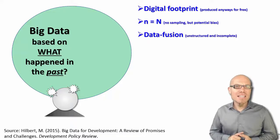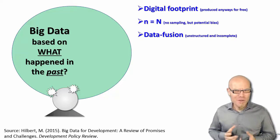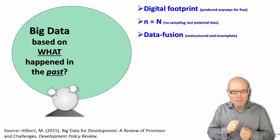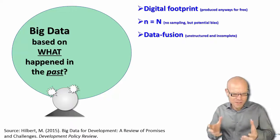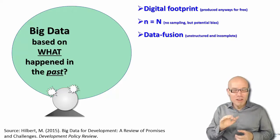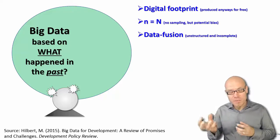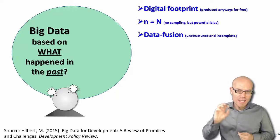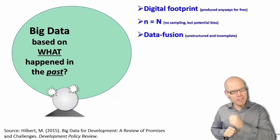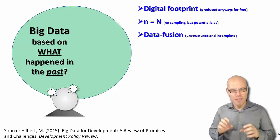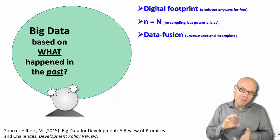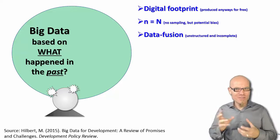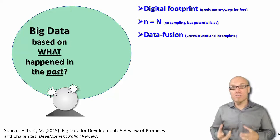The third characteristic is what people call data fusion. Big data — the digital footprint — is often highly unstructured and incomplete. Not everyone is on social networks every day with the same intensity, so databases have rows and columns that aren't completely filled out. We use complementary data sources to make up for missing pieces — text, pictures, videos, or audio bytes — different kinds of digital footprints fused together to create structured databases that we can then analyze.